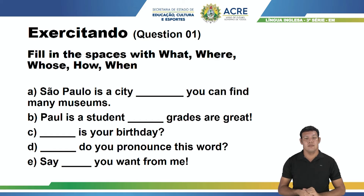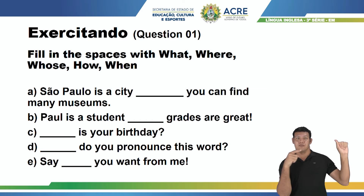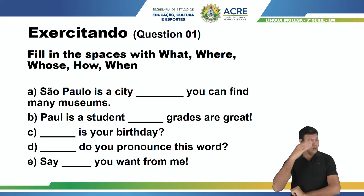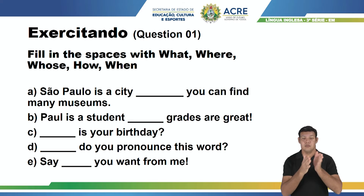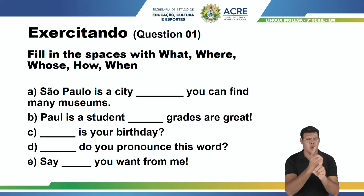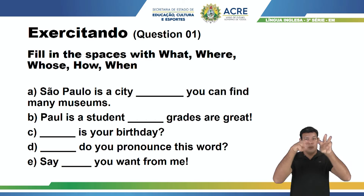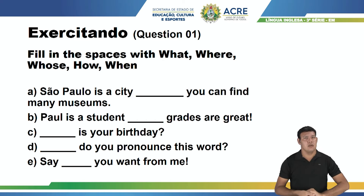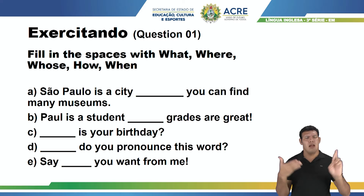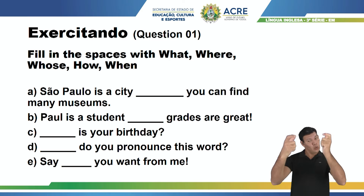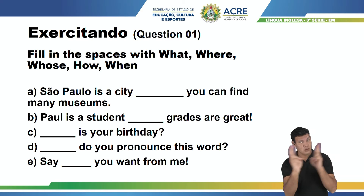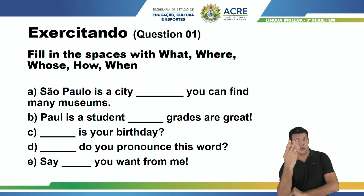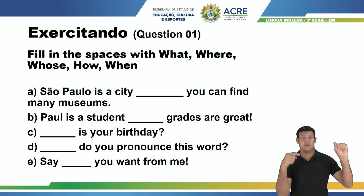Vamos lá. Letter A: São Paulo is a city — São Paulo é uma cidade — you can find many museums — você encontra vários museus. Vocês podem observar que está se referindo a lugar. Então você vai usar o pronome relativo where. Letra A: where.